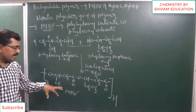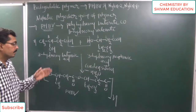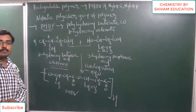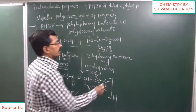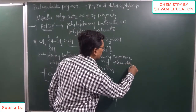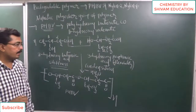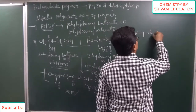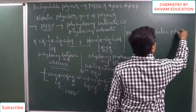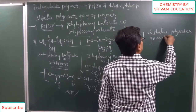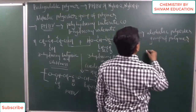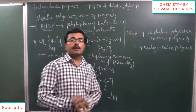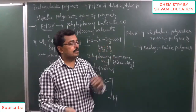The properties of PHBV: first, it is an aliphatic polyester group of polymer. Second, it is a biodegradable polymer, meaning it is active towards environmental changes, or we can say it is active towards bacterial degradation. The flexibility property of PHBV will be obtained from 3-hydroxy butanoic acid.